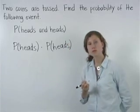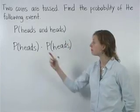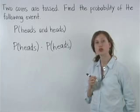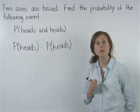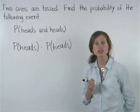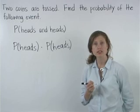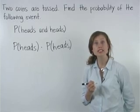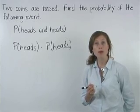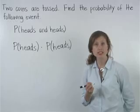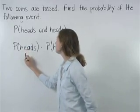Now, let's find the probability of tossing a heads on the first coin. Remember that a coin has two sides — heads and tails — and heads is one of these two sides. So the probability of tossing a heads is one out of two, or one half.